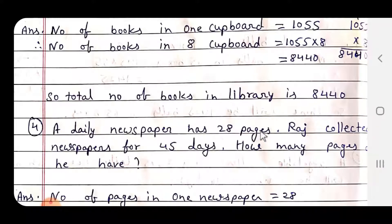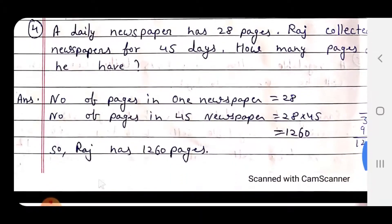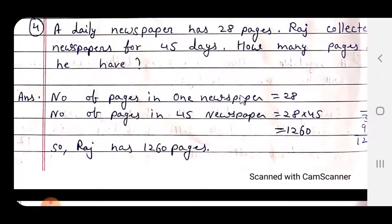A daily newspaper has 28 pages. Raj collected newspapers for 45 days. How many pages does he have? Number of pages in one newspaper: 28. Number of pages in 45 newspapers: 28 multiplied by 45 = 1260. So Raj has 1260 pages.